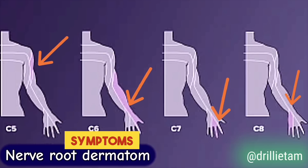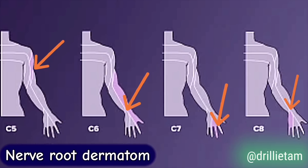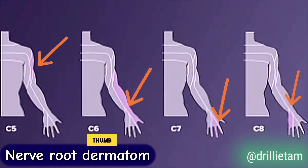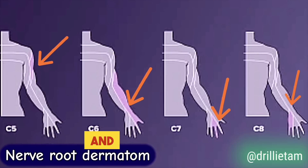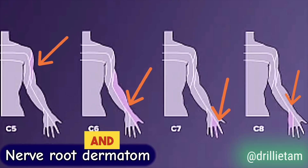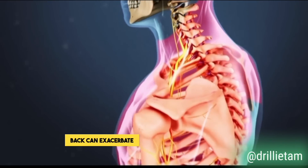The specific symptoms depend on which nerve root is affected. The C6 nerve root can cause symptoms in the biceps, wrist, thumb, and index finger. The C7 nerve root can affect the base of the neck, triceps, and middle finger. The C8 nerve root impacts the ring and little fingers, potentially affecting grip strength. Neck movements like turning, nodding, or leaning back can exacerbate symptoms.